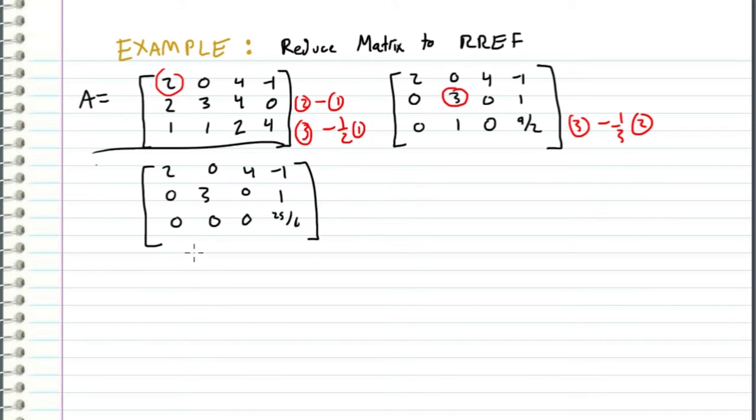So this matrix right here is the row echelon form, but now we need to get into the reduced row echelon form by making the pivots 1 and canceling everything above and below them to 0.